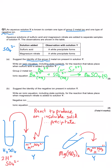For the second part, we need to identify the negative ion. When magnesium nitrate is mixed with solution Y, the white precipitate that forms is magnesium hydroxide, Mg(OH)₂. So the negative ion must be the hydroxide ion, OH⁻. For the ionic equation, start with the product: Mg(OH)₂ solid. The ions that make it are Mg²⁺ (aqueous, group 2, 2+ charge) and OH⁻ (aqueous, 1− charge). Because the formula is Mg(OH)₂, we need two hydroxide ions for every one magnesium ion.